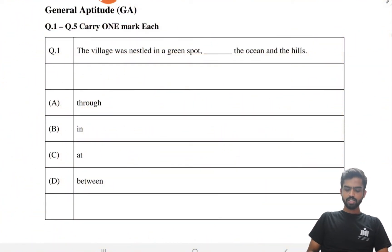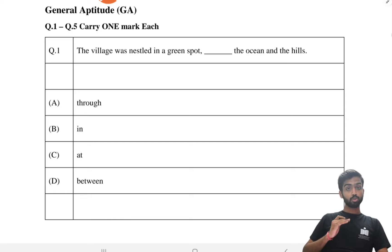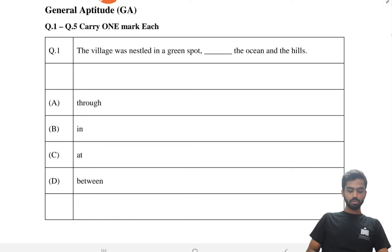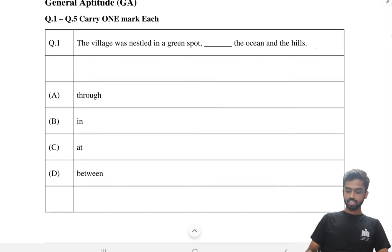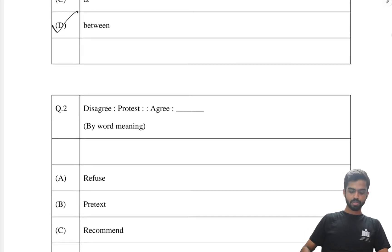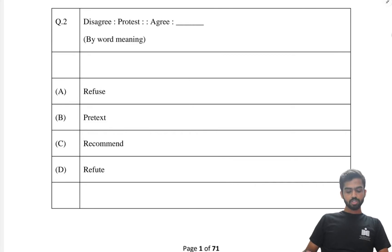The very first question: 'The village was nestled in a green spot — the ocean and the hills.' When we are talking about two particular things, it cannot be 'through' the ocean and the hills, or 'inside' the ocean and the hills. When talking about two entities, it has to be 'between.' So the answer would be 'between.'